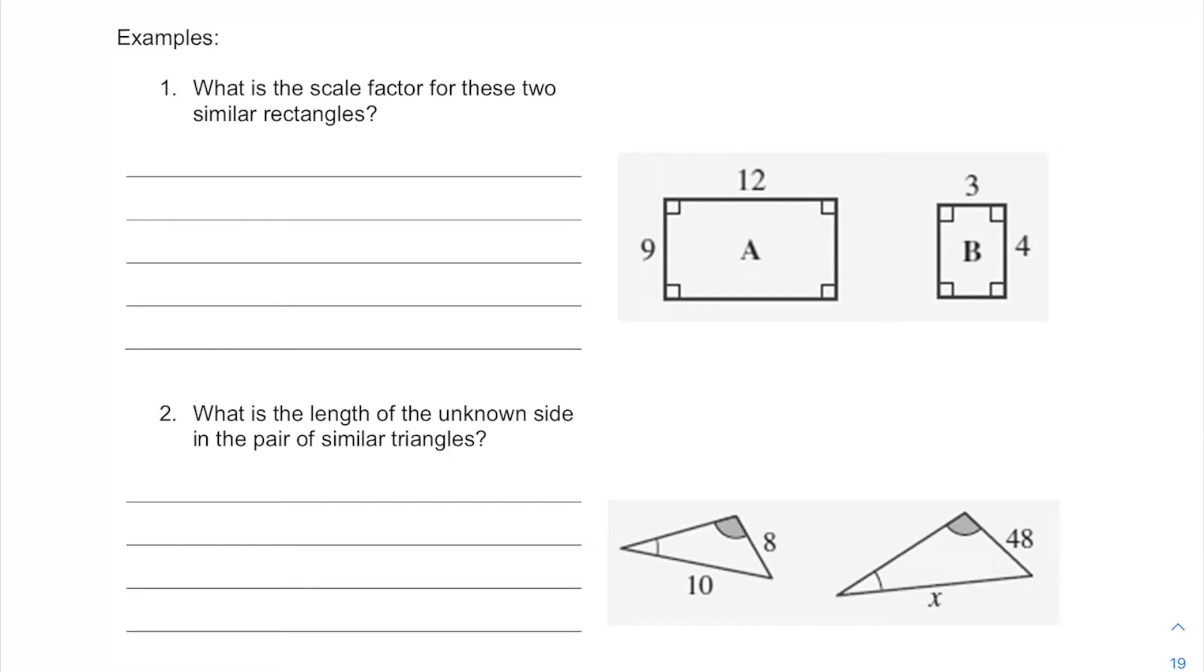First we're going to simply find a scale factor, then we're going to find a scale factor and use that to find an unknown side, and then we're going to find a scale factor and use that to find the area of a different sized shape.